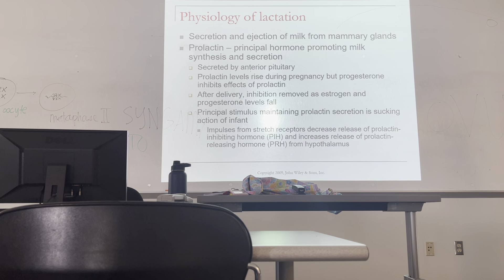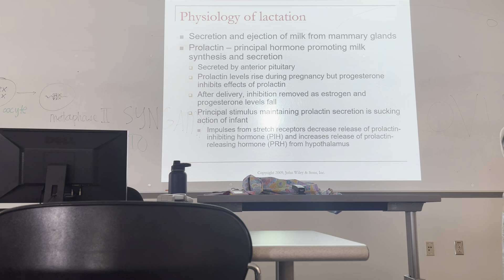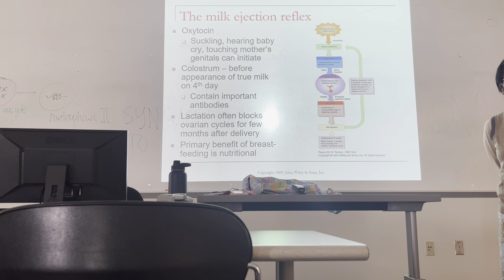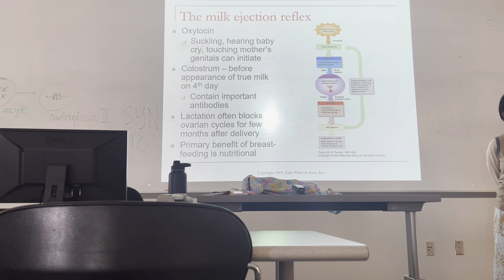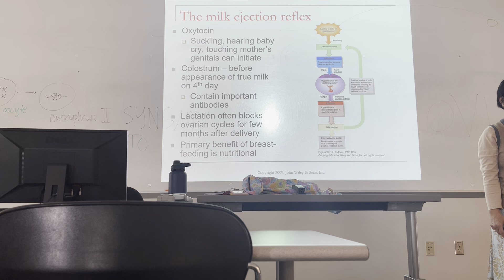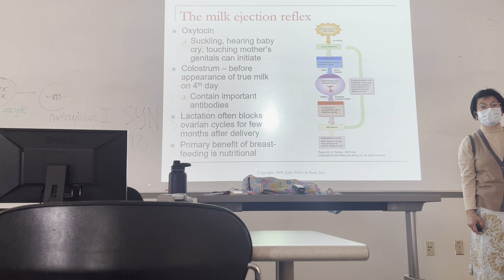After the baby is delivered, the next thing is to breastfeed. There are two hormones to remember: prolactin and oxytocin. Prolactin is the hormone that tells the mammary glands to make milk. Oxytocin tells the myoepithelial cells to squeeze the milk out — there are smooth muscle cells at the base of the mammary glands that, when they contract, squeeze out the milk. That's stimulated as the baby suckles.